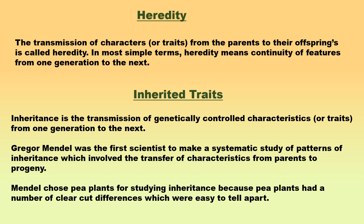Inherited traits: Inheritance is the transmission of genetically controlled characteristics or traits from one generation to the next. Gregor Mendel was the first scientist to make a systematic study of patterns of inheritance in plants, which involved the transfer of characteristics from parents to progeny. He did this by using different varieties of pea plants which he grew in his garden.